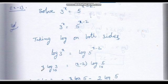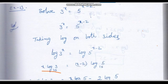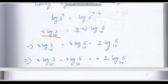Applying the power rule: x log 3 equals (x minus 2) log 5. Expanding: x log 3 equals x log 5 minus 2 log 5.